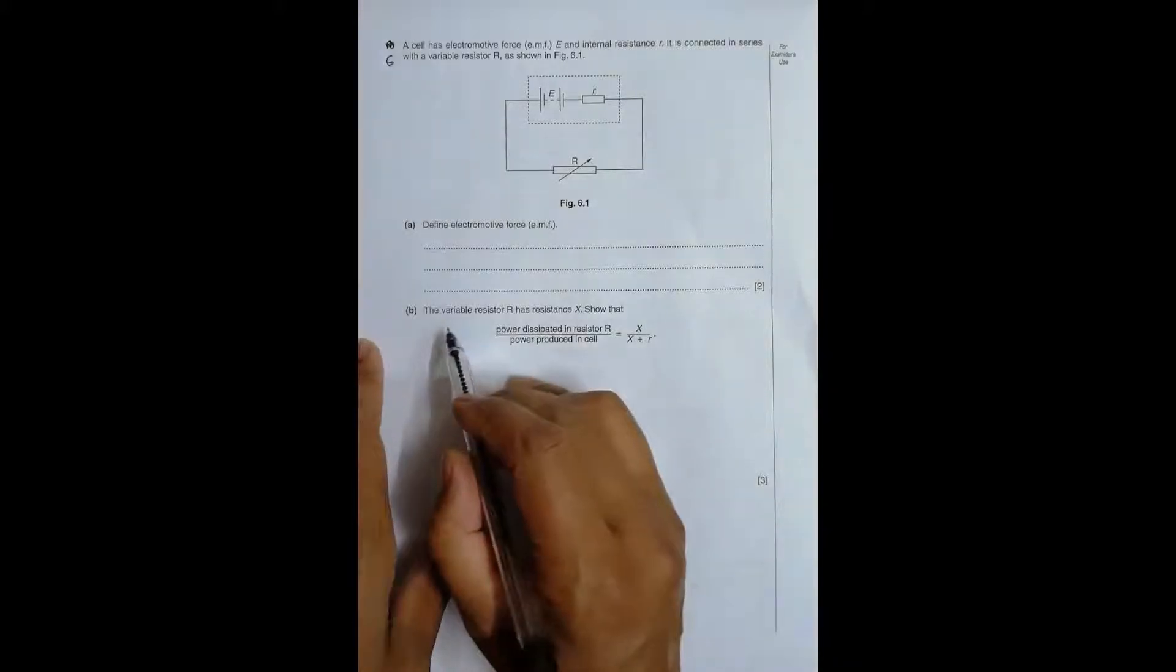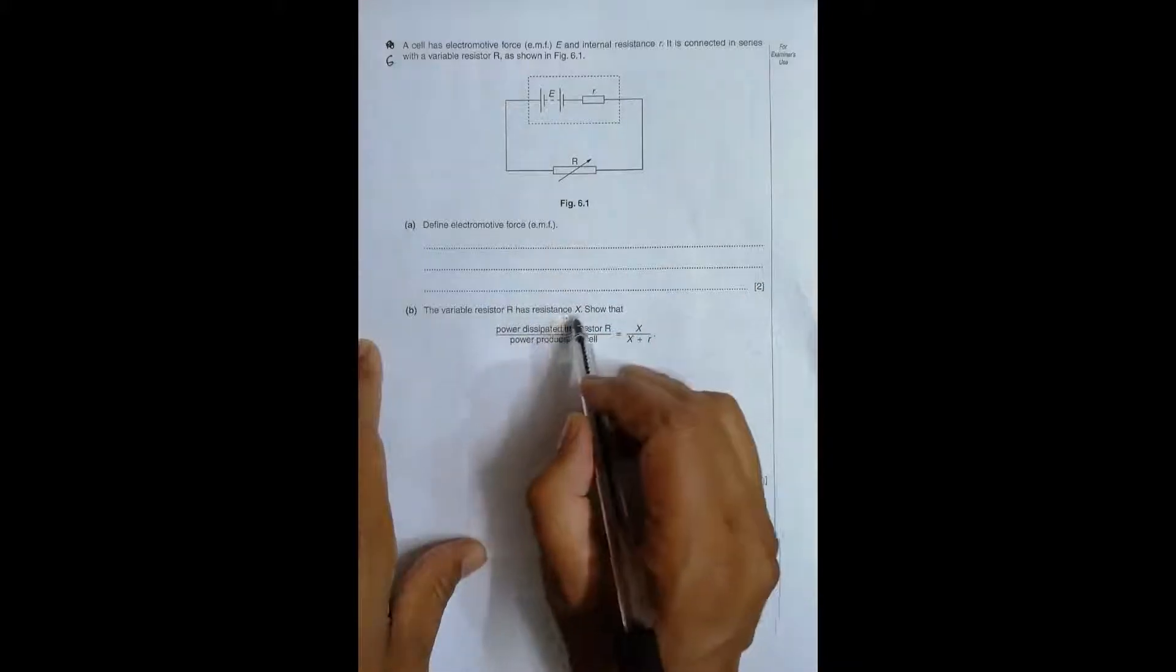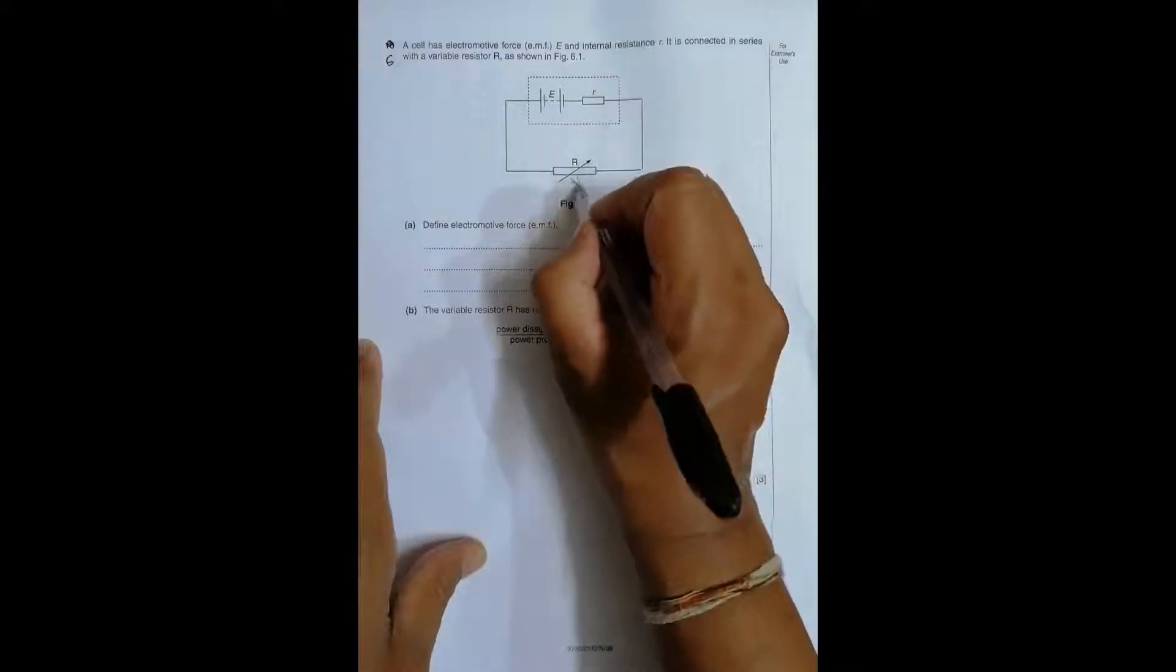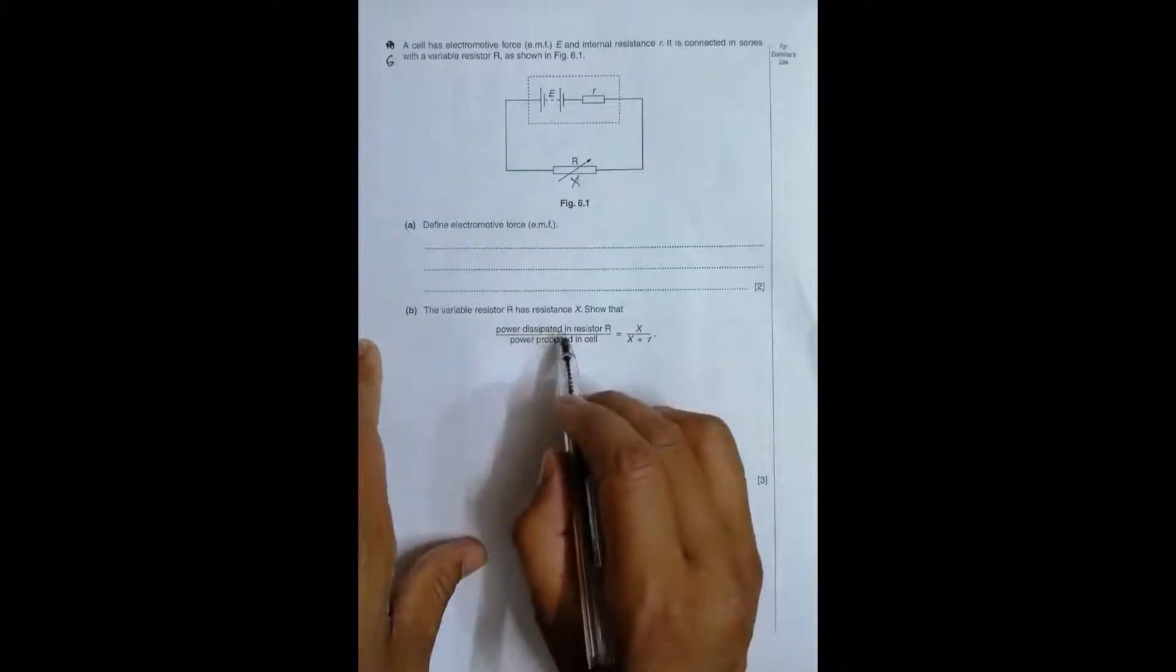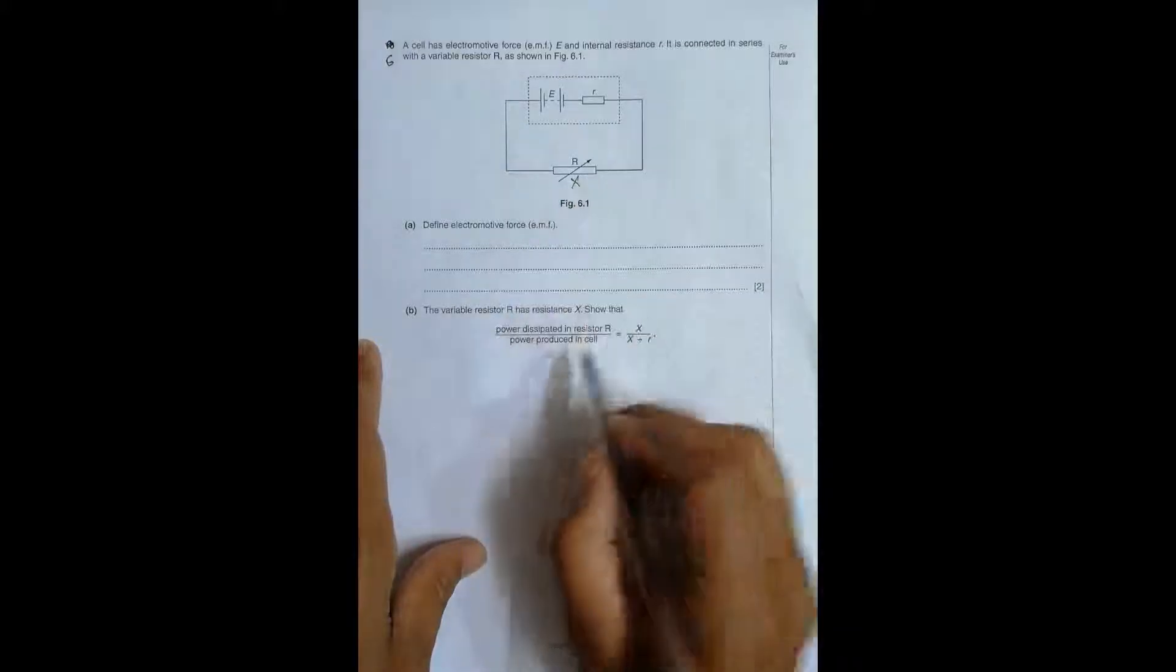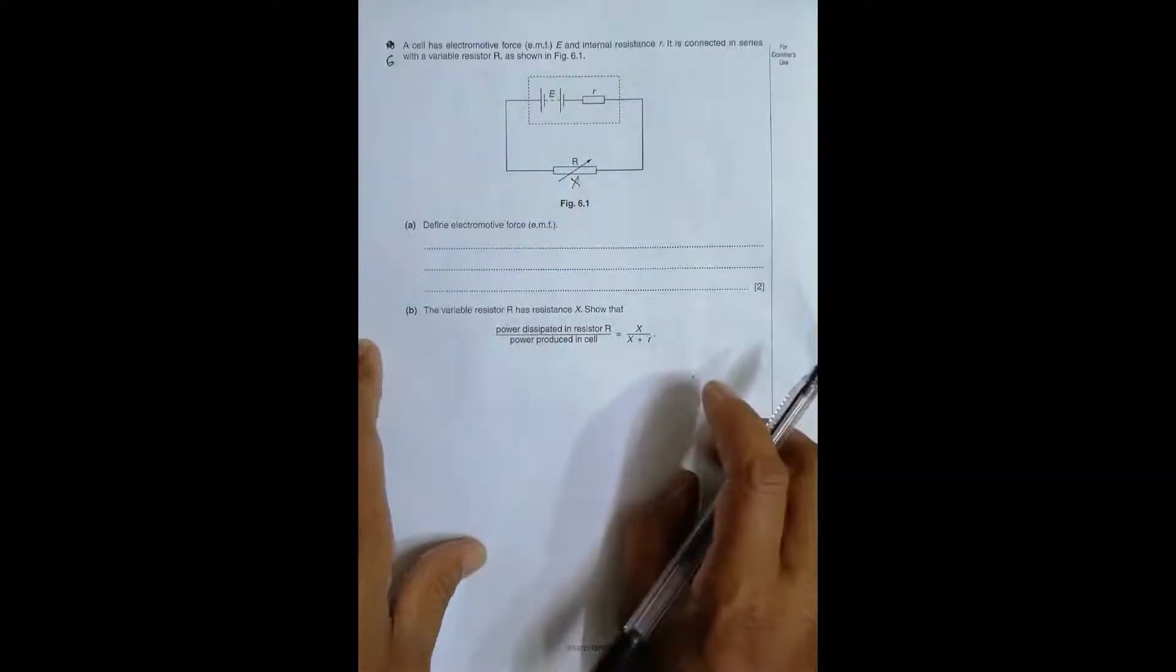In part B we have the variable resistance R has a resistance X. Show that the ratio power dissipated in resistor R by power produced in cell is equal to X by X plus R.